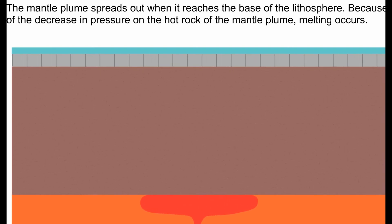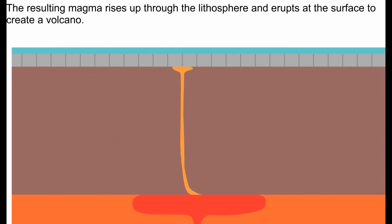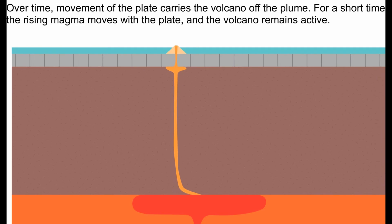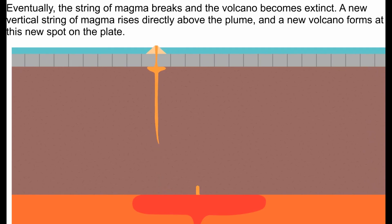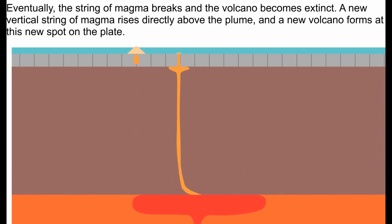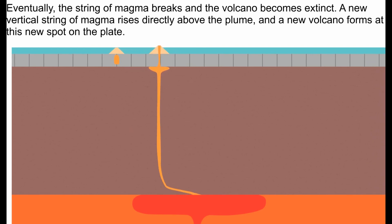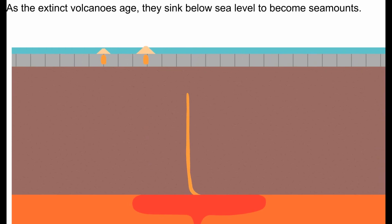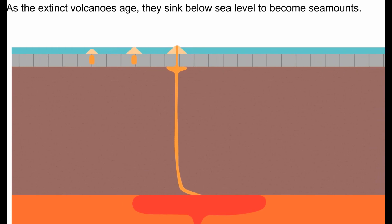In this animation over here, we can see the formation of the intraplate hotspot underneath the crust, and then you can see it rising up and burning its way through and forming an island. And then you can see the crust moving away from the intraplate hotspot, allowing for the formation of another island, and another island, and so forth. And as the islands move away from the intraplate hotspot, they now become extinct.